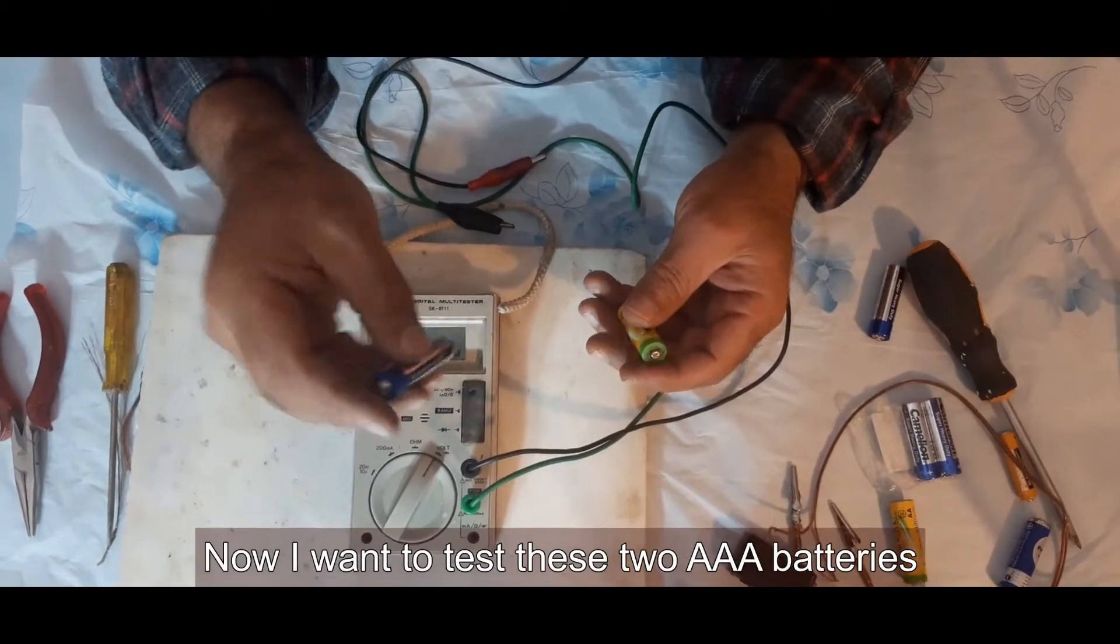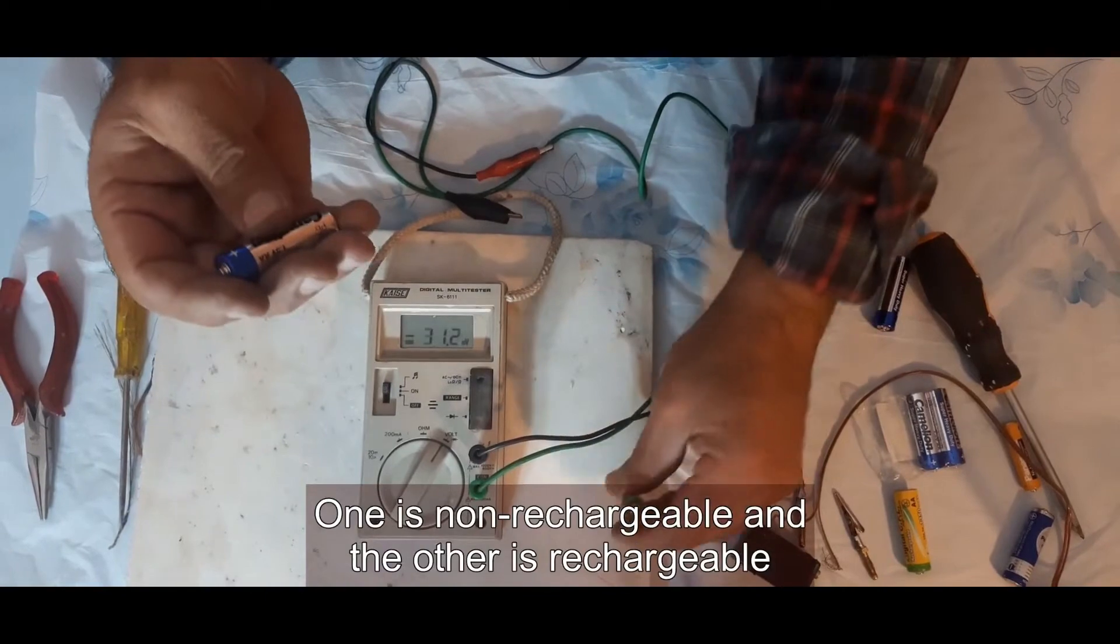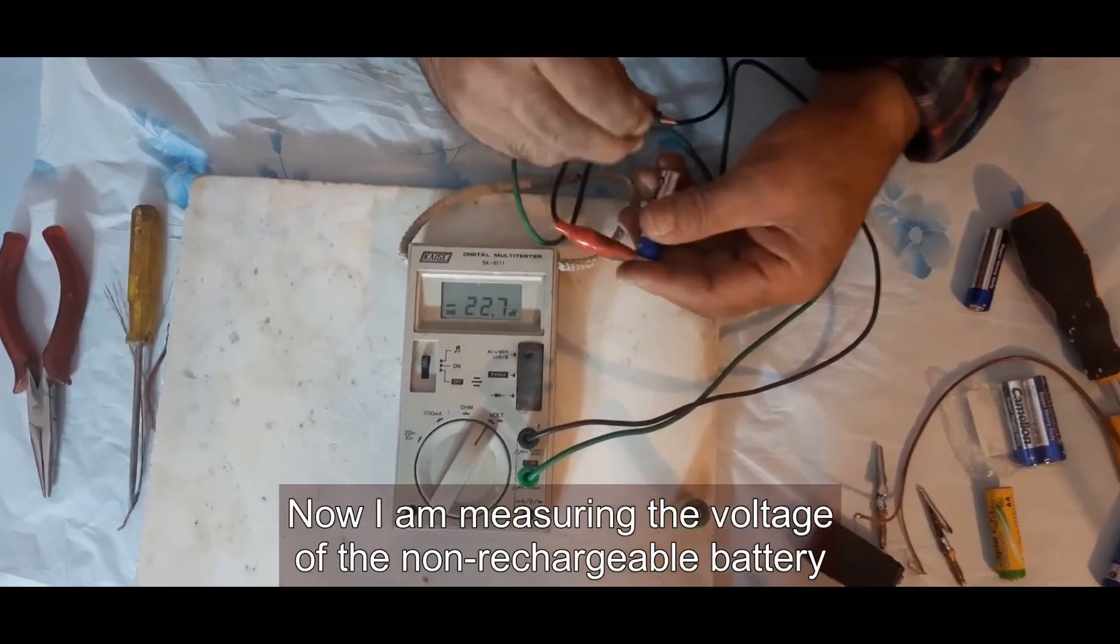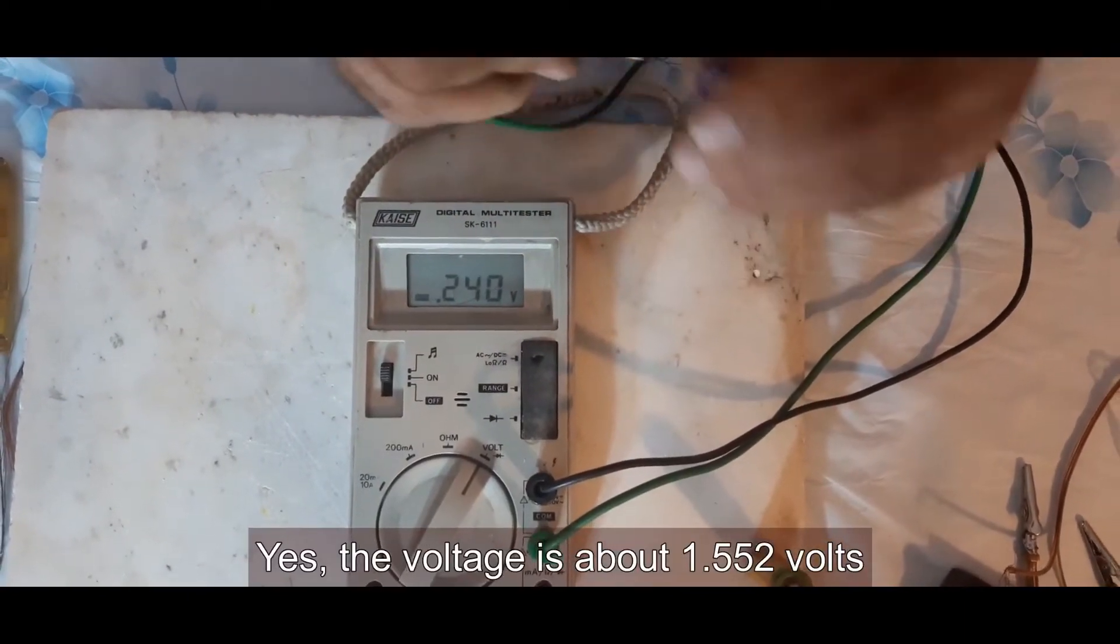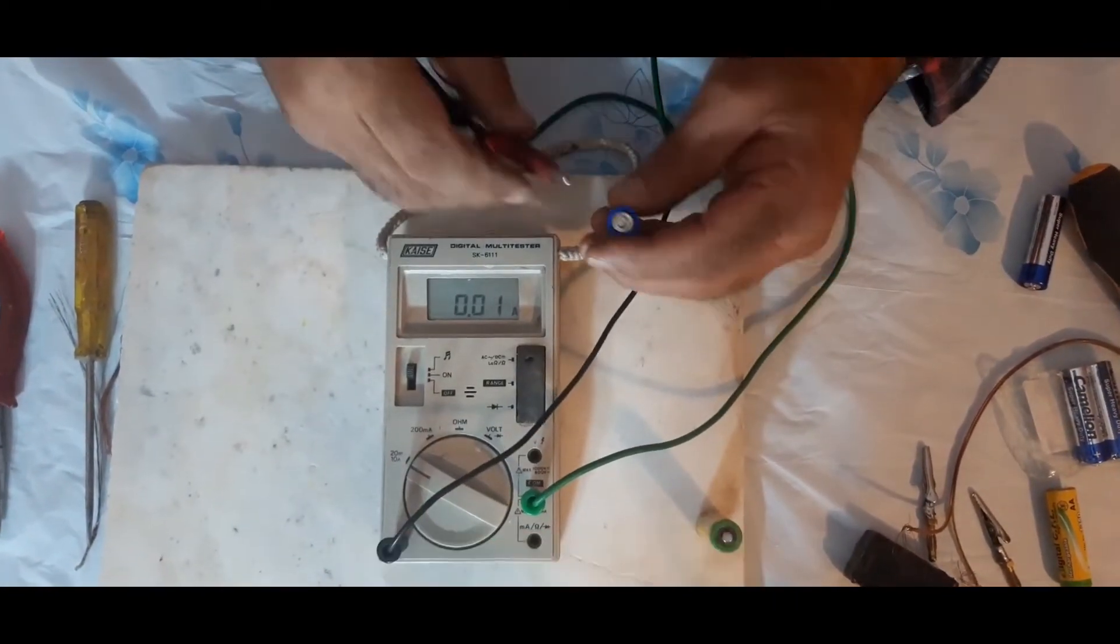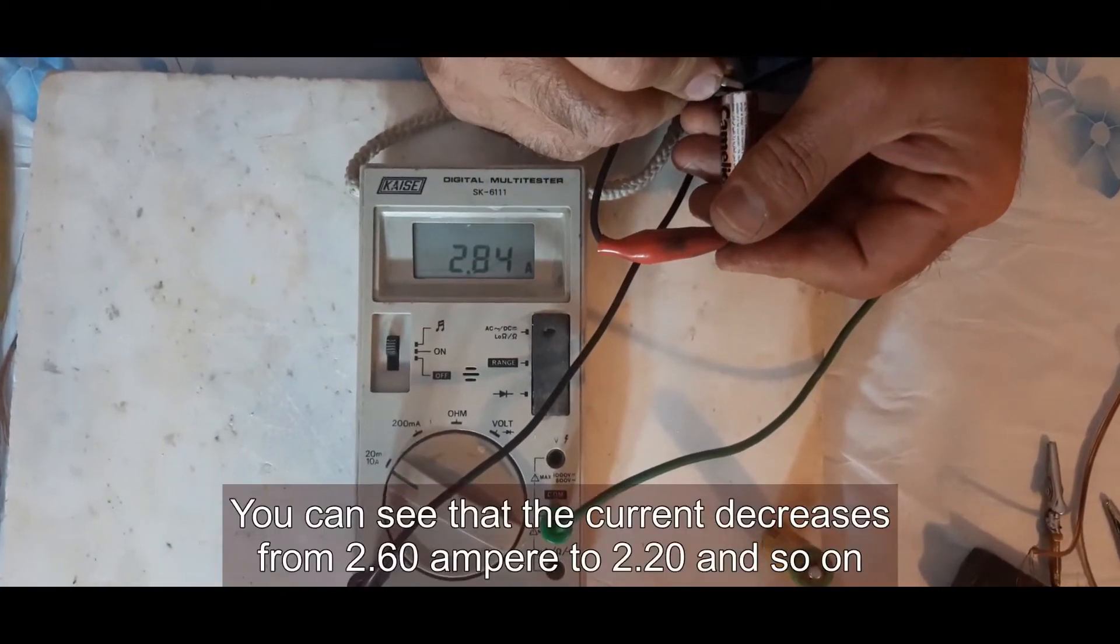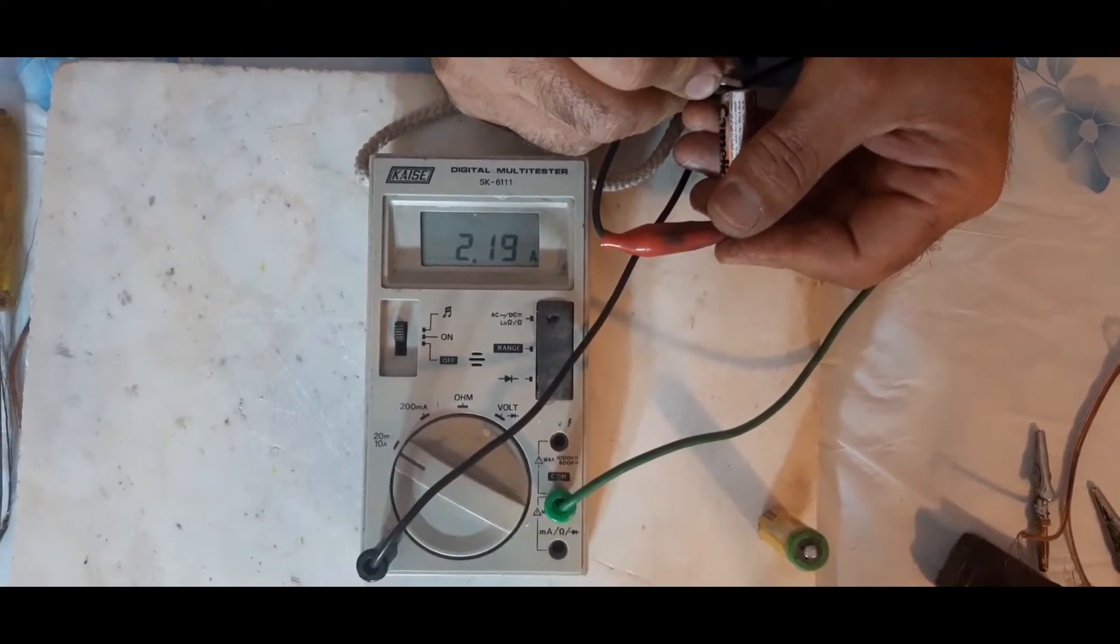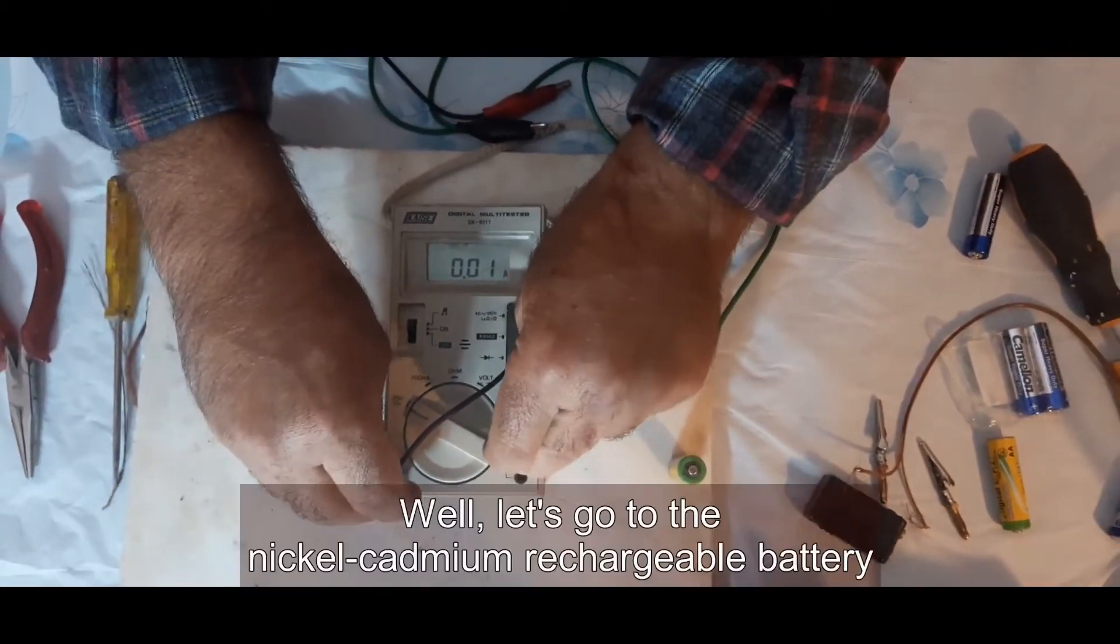Now, I want to test these two AAA batteries. One is non-rechargeable and the other is rechargeable. I'm measuring the voltage of the non-rechargeable battery. The voltage is about 1.552 volts. I short-circuit this battery, then we measure the current. You can see that the current decreases from 2.60 amperes to 2.20 and so on.